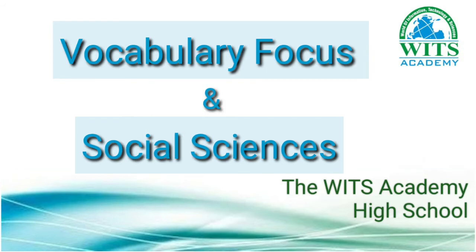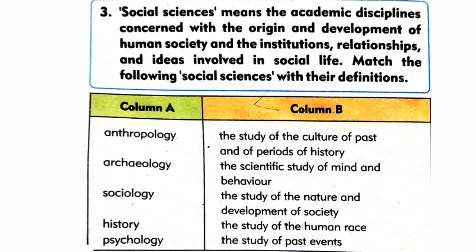Students, at the start of my lecture I told you that today we shall be learning vocabulary focus and I shall also let you know about social sciences. Open your books to page number 14 and come to question number three. The question is: social sciences means the academic disciplines concerned with the origin and development of human society and the institutions, relationships, and ideas involved in social life. Match the following social sciences with their definitions.